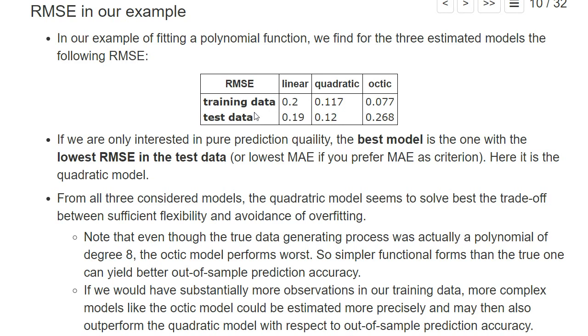Therefore, we use the root mean squared error in the test data set as a criterion. And here we see that the octic model has the worst root mean squared error, while the quadratic model has the best root mean squared error. So one would say here from these three models we have considered, the quadratic regression is basically the best model.